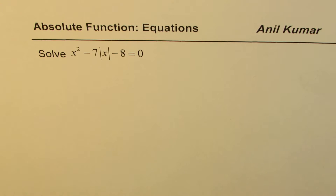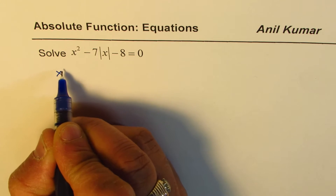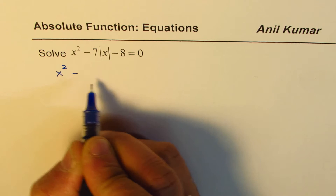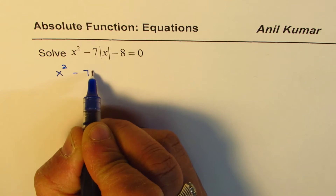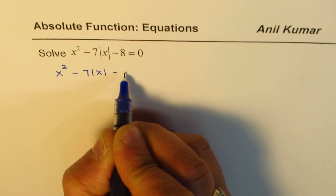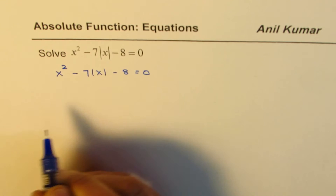You can pause the video, answer the question, and then look into my suggestions. Let us consider this equation once again. The equation is x squared minus 7 absolute x minus 8 equals to 0.